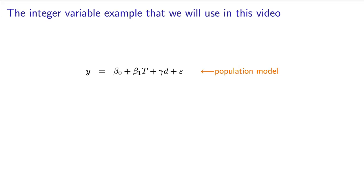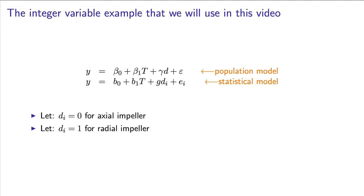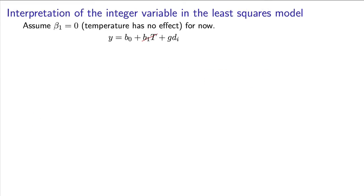Let's take a look here at the population model for this case. y is equal to some intercept, beta zero, plus beta one times t, with beta one representing the effect of temperature, plus gamma times d, where d represents the type of impeller, and then finally add an error term. When we go estimate the model parameters, we will estimate an intercept b0, we will estimate a slope b1 for temperature, and we will go estimate a slope g for the impeller effect, multiplied by d_i. d_i is what we call our coded variable. We set it equal to zero if we're using an axial impeller. We set d_i equal to one when we are using a radial impeller. It's very easy to make a prediction from this model. d_i takes on values of either zero or one. No other values are possible for it. Now let's go take a look at how we might interpret the effect of g times d_i in that model.